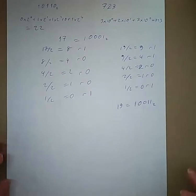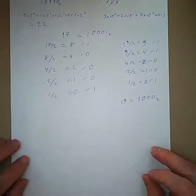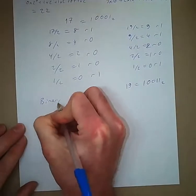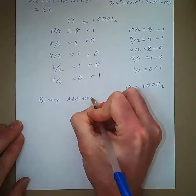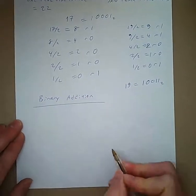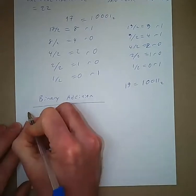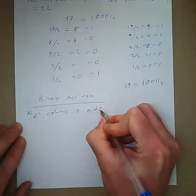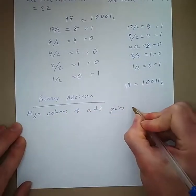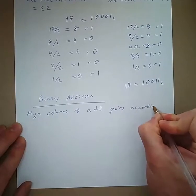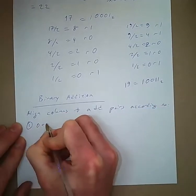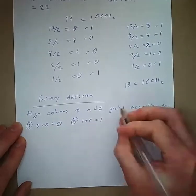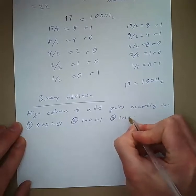Now we'll talk about different binary operations. First of all, binary addition. To add two binary numbers, you align the columns and then add pairs according to these rules: 0 plus 0 gives you 0. 1 plus 0 gives you 1, or 0 plus 1. 1 plus 1 gives you 0, and you carry a 1.